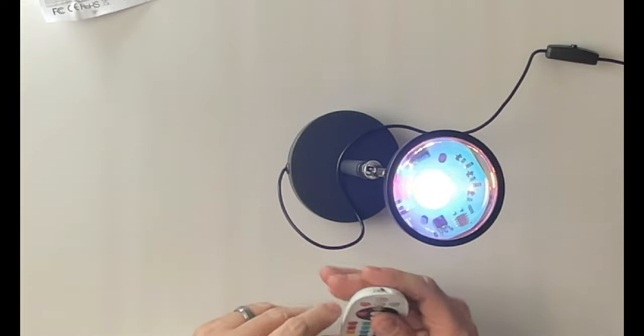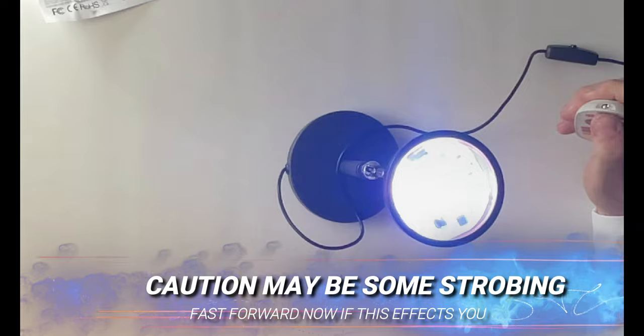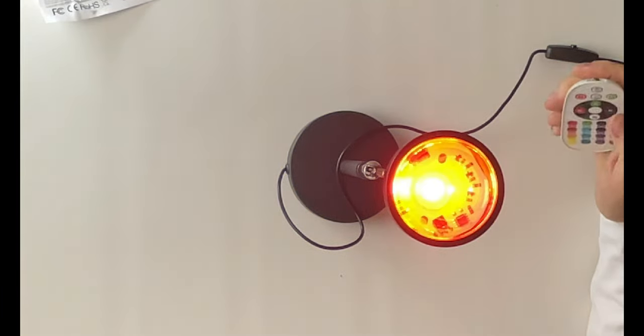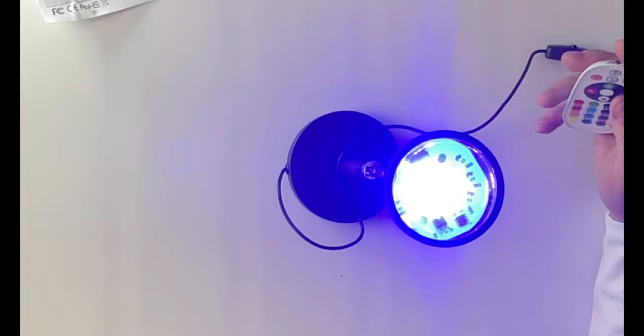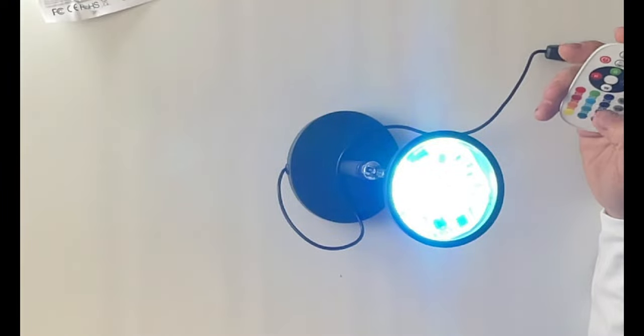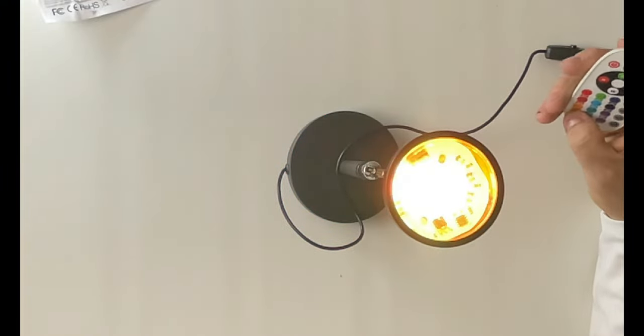All right, so now everything's plugged in there. We can change the brightness here. We can turn it off. We can turn it back on. We can change the color. That's blue there. And then we have green, and we have light blue, and orange, yellow.